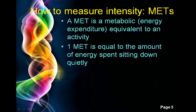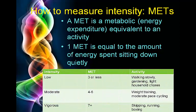So how do you actually measure the intensity of your exercise? You would look at using METs — metabolic equivalents. One MET is equivalent to sitting down quietly. The more METs you measure, the more intense your activity gets. Low intensity is three METs or less, which includes walking slowly, gardening, and light household chores such as doing the dishes.